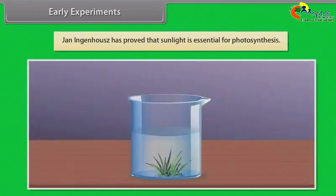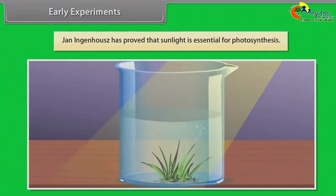Jan Ingenhaus proved that sunlight is essential for photosynthesis. He experimented on aquatic plants. In the presence of sunlight, there were small bubbles around the green parts of the plant. In the absence of sunlight, no bubbles were formed. These bubbles were found to be oxygen.